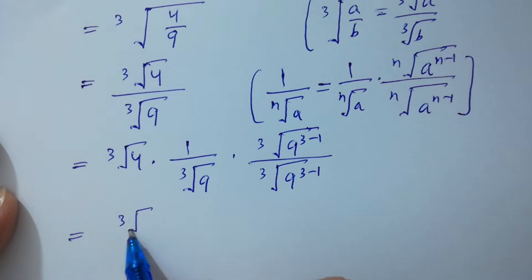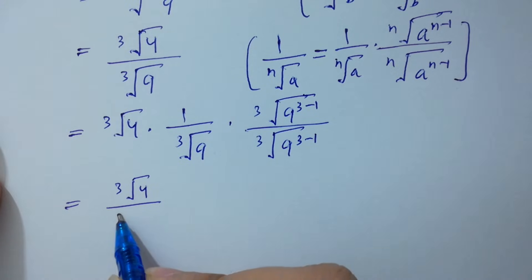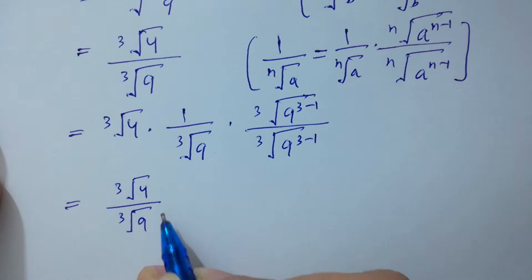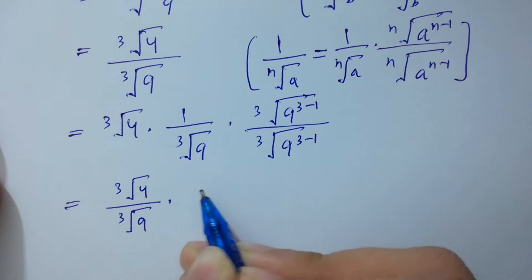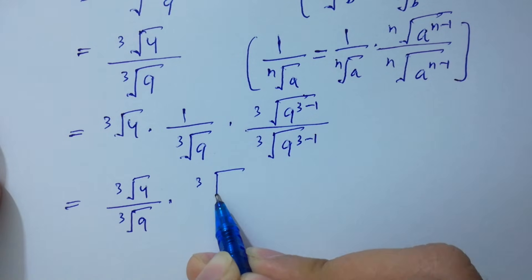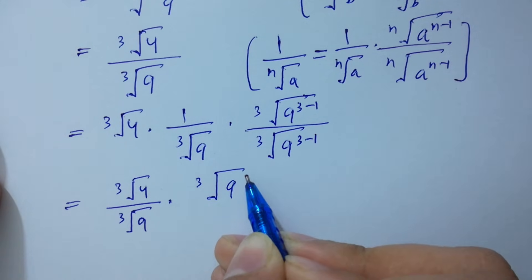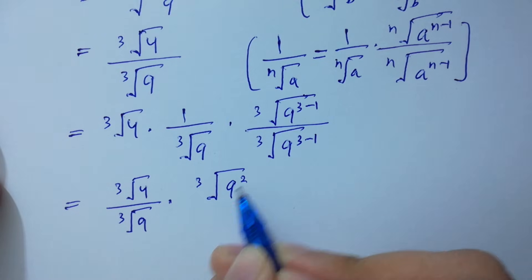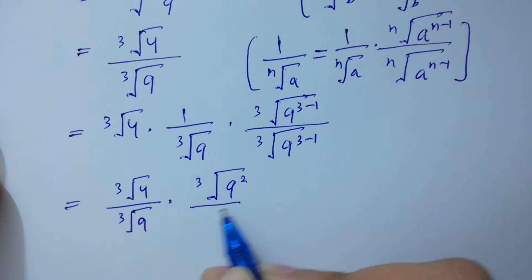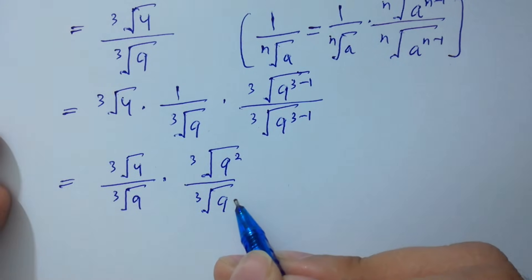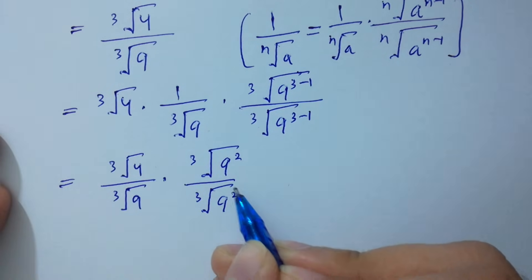So we get cube root 4 times cube root 9 to the power (3 minus 1), which is cube root 4 times cube root 9 squared, all over cube root 9 to the power 3, which equals 9.